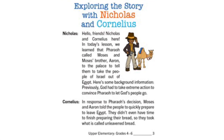We are back. I hope you enjoyed the video. Now let's explore our lesson today with Nicholas and Cornelius. In today's lesson, we learned that Pharaoh called Moses and his brother Aaron to the palace to tell them to take the people of Israel out of Egypt. Previously, God had to take extreme action to convince Pharaoh to let God's people of Israel go. In response to Pharaoh's decision, Moses and Aaron told the people to quickly prepare to leave Egypt. They didn't even have time to finish preparing their bread, so they took what is called unleavened bread.